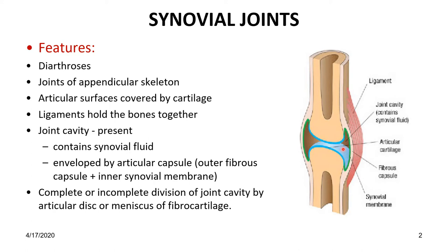The articular surface is covered by hyaline cartilage. Ligaments hold the bones together. The joint cavity contains synovial fluid and is enclosed by the articular capsule. Sometimes the joint cavity is divided by an articular disc or meniscus of fibrocartilage.